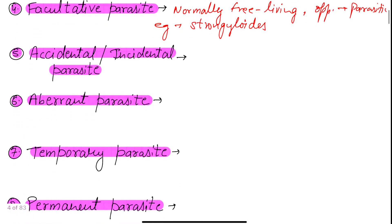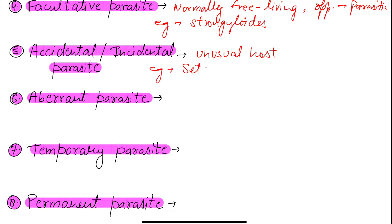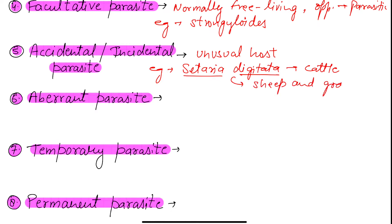After this we have the accidental or incidental parasite. Accidental, by the name, means by chance — those parasites which end up in unusual hosts. For example, Setaria digitata is the parasite of cattle; cattle is its usual host. But sometimes Setaria digitata can also infect sheep and goat. When it infects sheep and goat, we call it an accidental or incidental parasite.